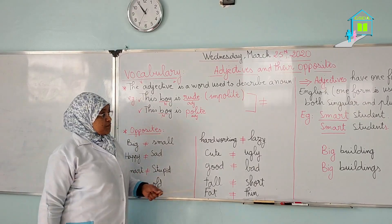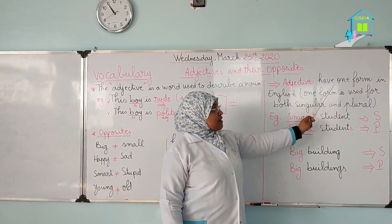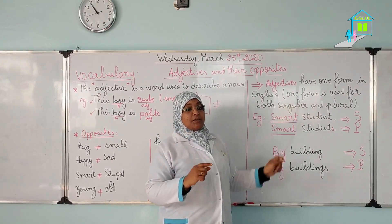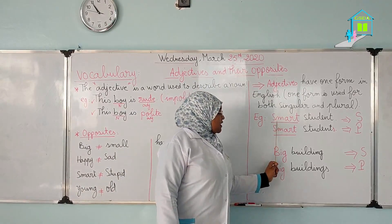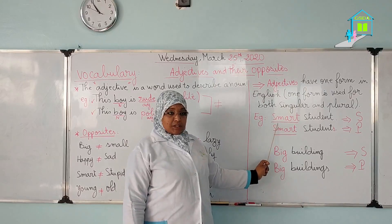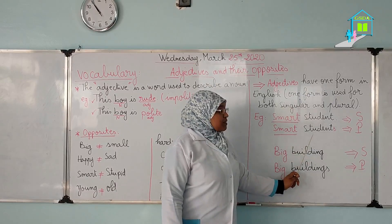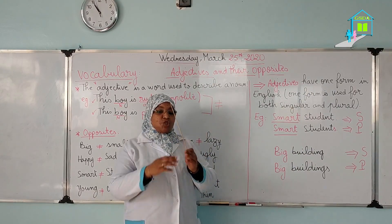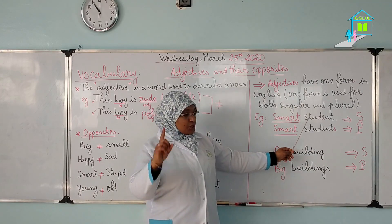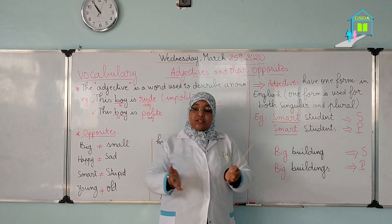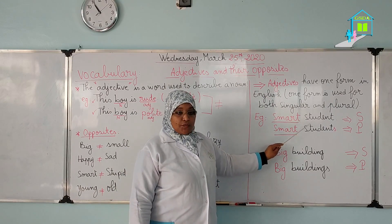Short and long adjectives. Let's move on to see the general rule. Adjectives have one form, either in the singular form or the plural form. Which means we can use, for example, 'smart' for one student — singular — and 'smart' with students — a group of students, plural. 'Smart student' singular and 'smart students' plural — the same word for both cases.